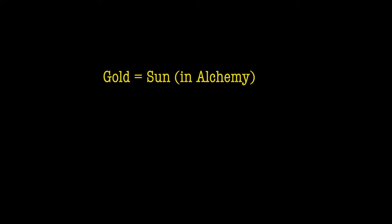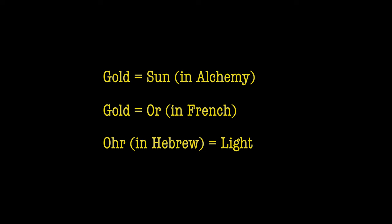Gold itself, if you dissolve it — because gold in alchemy is represented by the sun, by light itself — in French, gold is 'or,' and 'or' in Hebrew means light. Gold is the closest material to light. And it is said in alchemy that if you try to transmute gold and dissolve it to become even more pure than what it is, then gold becomes light.